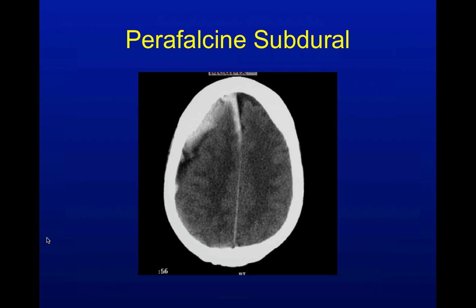Sometimes the subdural will move along slightly different paths. Here it is along the skull, but it's also moving along the falx. So there's hematoma on this side but not on the other side. A lot of this ends up being pattern recognition — once you've seen it, you'll recognize it again.